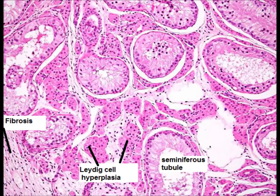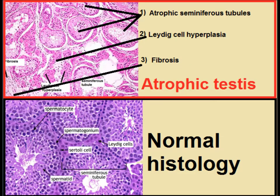This is the normal histology. But when there is atrophy, you can appreciate the tubules are lined apart. There is increased Leydig cells, which is termed Leydig cell hyperplasia, and there is increase in fibrous tissue which is called fibrosis. Atrophic testes will show seminiferous tubules with loss of spermatogenesis. You can compare the atrophic testes with the normal histology.